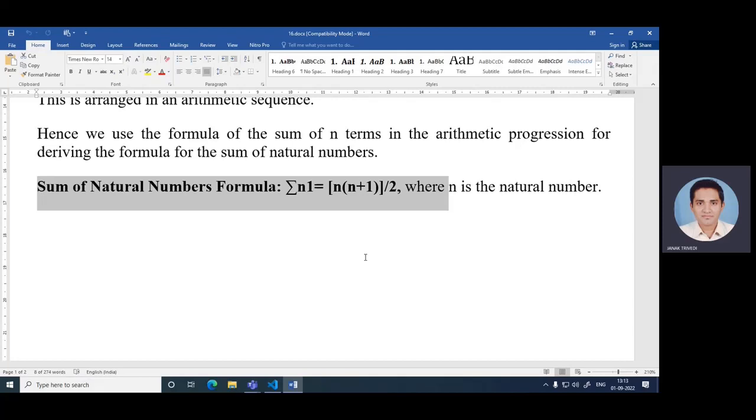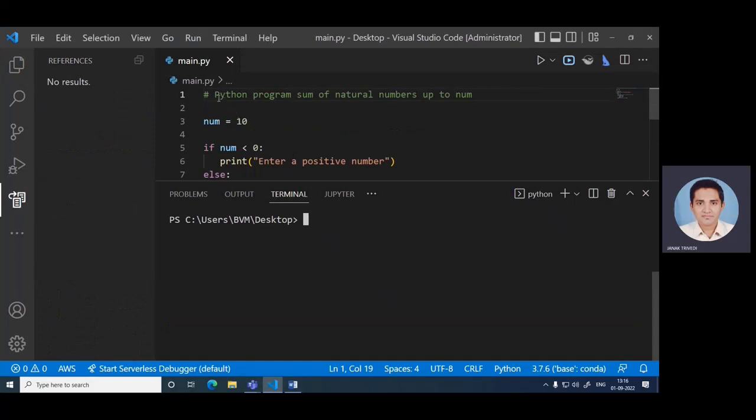In each iteration of the loop, we add the number to sum and the value of the number is decreased by 1. That is the way we can complete this program using while loop. Now let's go through the program again.